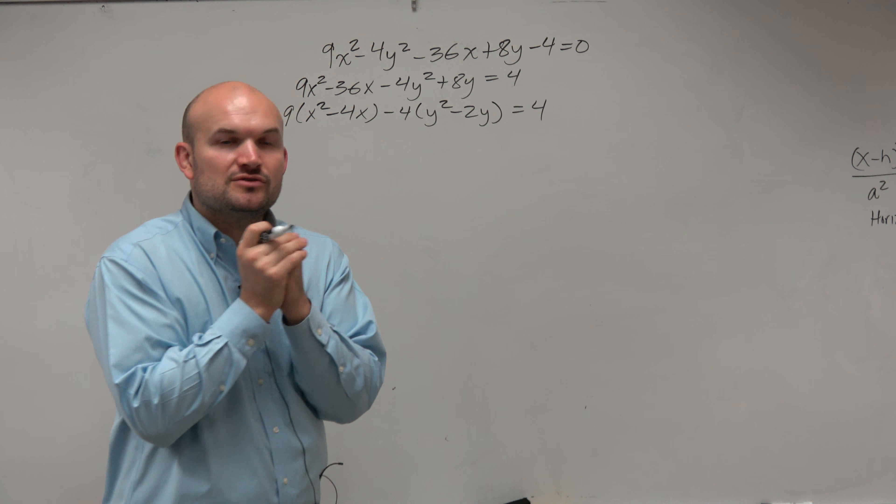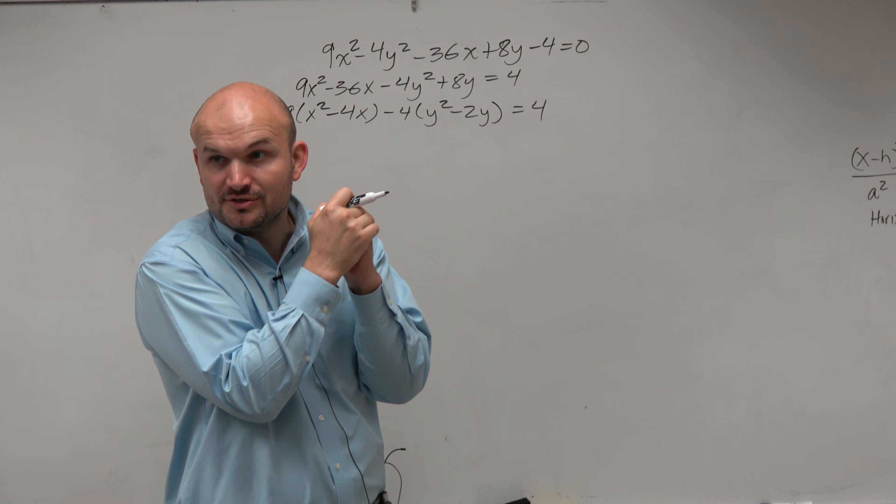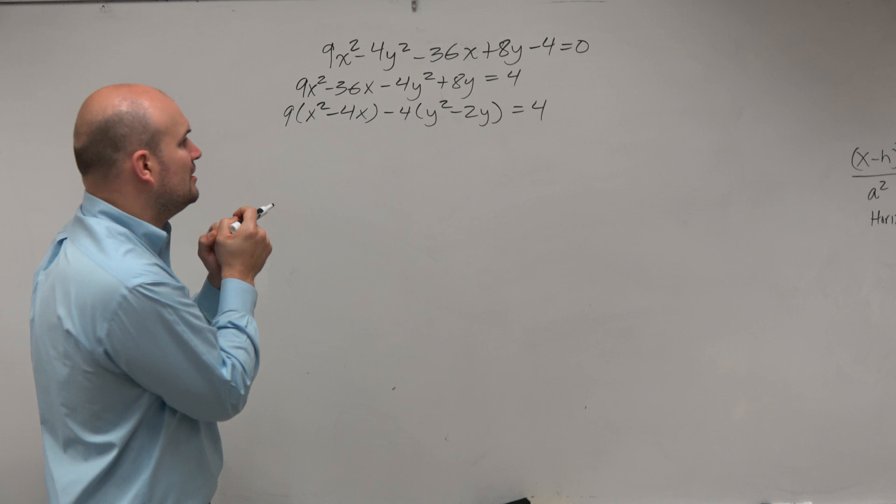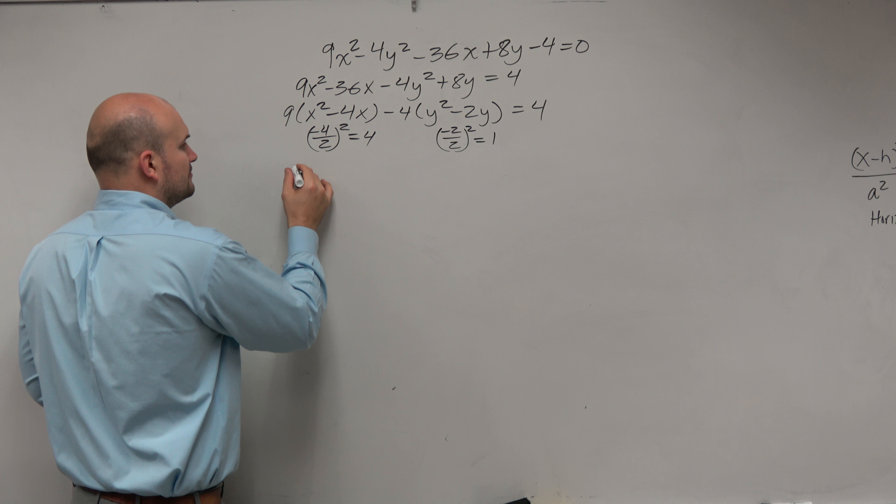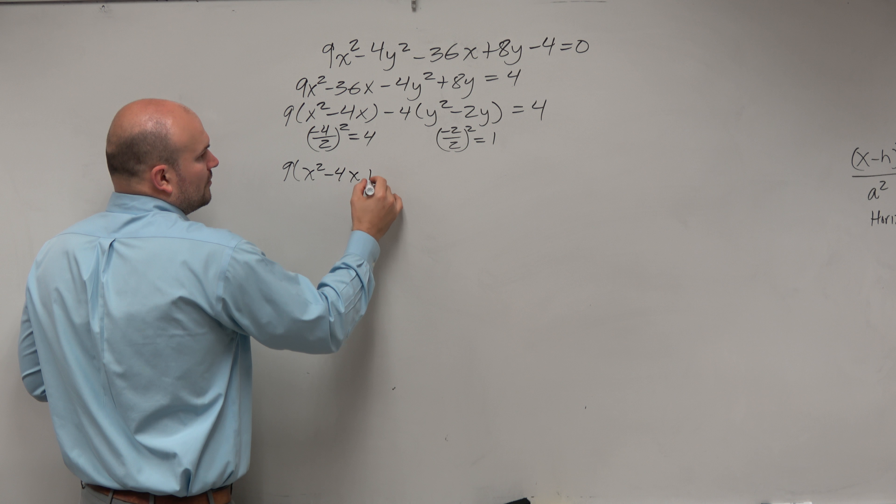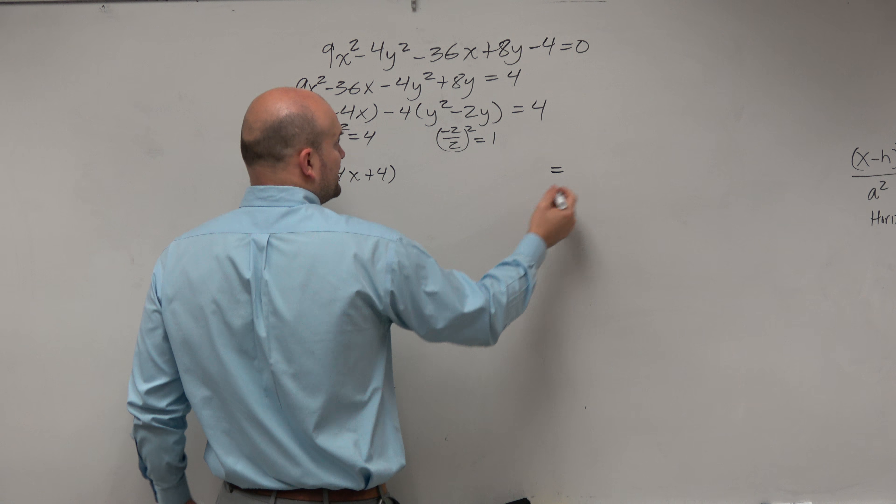Remember guys, we cannot complete the square when we have coefficients other than 1. So I have to factor out the 9, factor out this negative 4. Now I'm at the point where I can complete the square. Right now, I have this quadratic inside the parentheses that I want to create to be a perfect square trinomial. Because if I can create a perfect square trinomial, I can factor it down to a binomial squared. And that's exactly what is in my formula, our binomial squared.